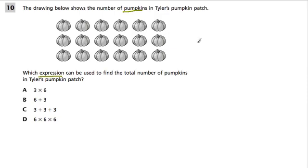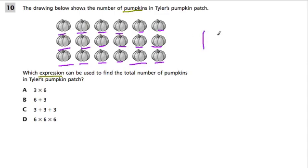I'm going to take advantage of the fact that they show these pumpkins and count them. We have 1, 2, 3, 4, 5, 6, 7, 8, 9, 10, 11, 12, 13, 14, 15, 16, 17, 18. So I know there are 18 pumpkins.